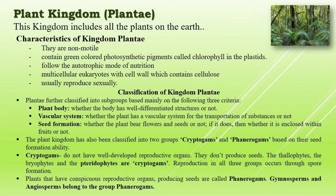Good morning, dear children. Today we are going to start a new chapter named Plant Kingdom. Plant Kingdom includes all the plants which are green in color and can carry out photosynthesis because they possess chloroplasts, which in turn contain chlorophyll. Cells are surrounded by a cell wall mainly composed of cellulose.